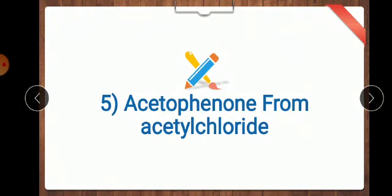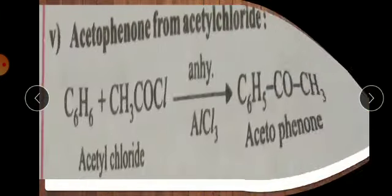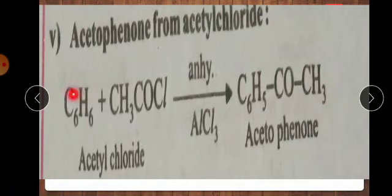Acetophenone from acetyl chloride. Next question. This is actually Friedel-Crafts reaction. Benzene C6H6 and acetyl chloride formula CH3COCl. Here one hydrogen and Cl will be removing as HCl in presence of anhydrous AlCl3. Remaining compound will be added as C6H5COCH3. The compound is acetophenone.